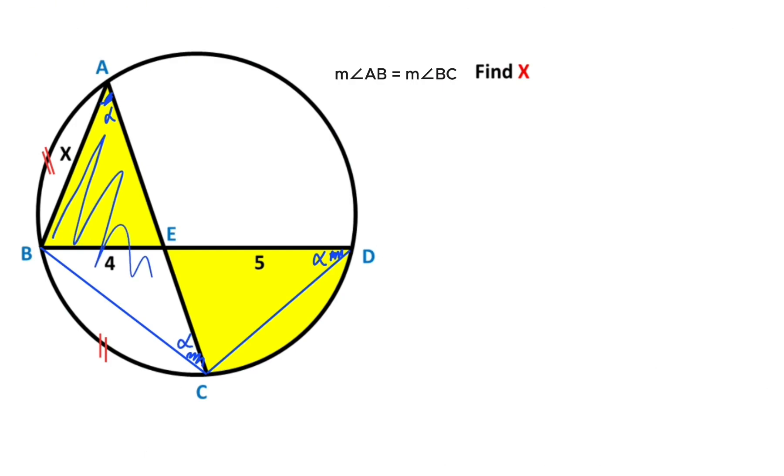Then, if you focus on this triangle, this triangle is an isosceles triangle, right? So triangle ABC is an isosceles triangle.